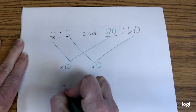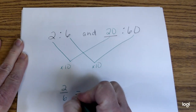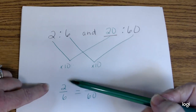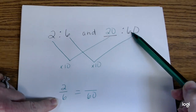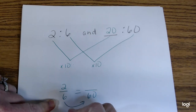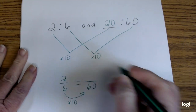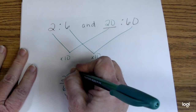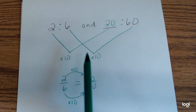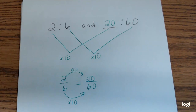Once again, if you wanted to write it as a fraction you sure could — 2 to 6, something to 60. Multiply the bottom by 10, multiply the same thing on the top. Equivalent ratios — we're going to multiply or divide by the exact same number.